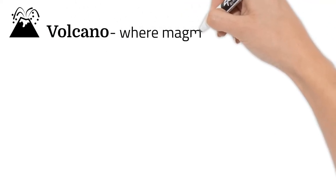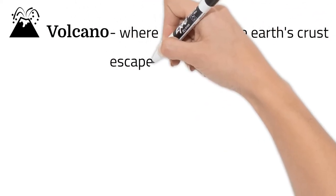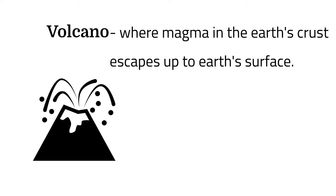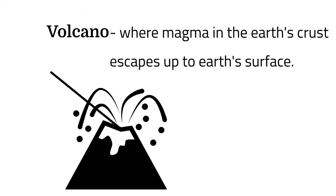A volcano is where magma in the Earth's crust escapes up to Earth's surface. Remember magma on the surface is called lava. The opening in the top of a volcano where the magma escapes is called a vent.